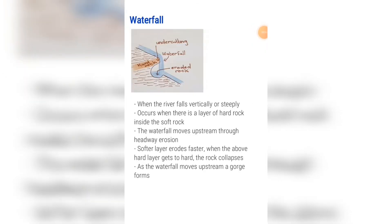Waterfall: a waterfall is when the river falls vertically or steeply. It occurs when there is a layer of hard rock within layers of soft rock. The waterfall moves upstream through headward erosion, which is when the softer layer underneath the hard rock gets eroded, and when the hard rock and the above layers get too heavy, it collapses, therefore moving the waterfall upstream.